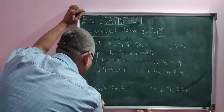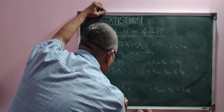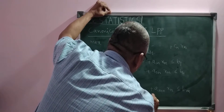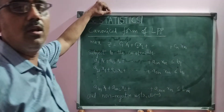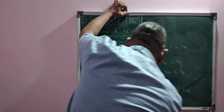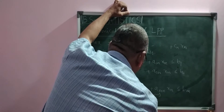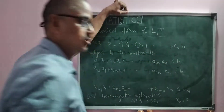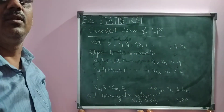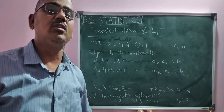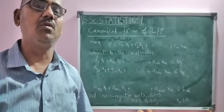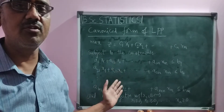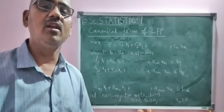And non-negative restrictions, as usual: x1 ≥ 0, x2 ≥ 0, and so on, xn ≥ 0. All the decision variables x1, x2, ..., xn must be greater than or equal to 0. This kind of formulation of LPP is nothing but the canonical form of linear programming problem.